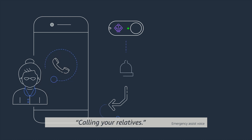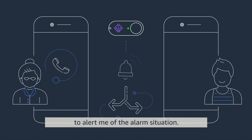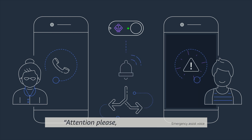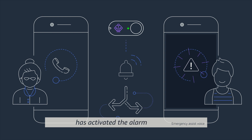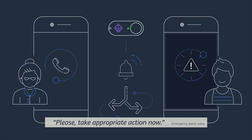'Call your relatives.' The alarm is going to remain active and so it's going to call my phone to alert me of the alarm situation. The message says: 'Attention please, your relative has activated the alarm and still has not deactivated it. Please take appropriate actions now.'